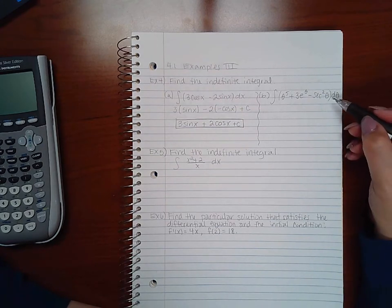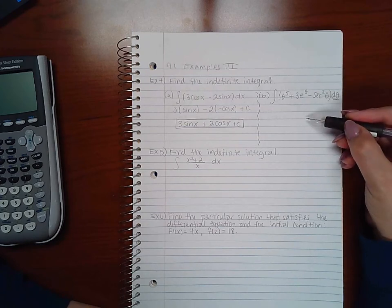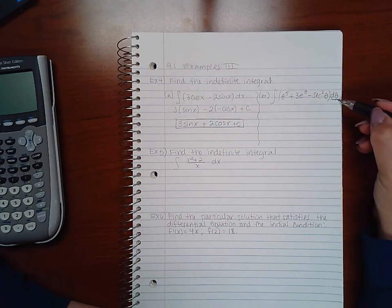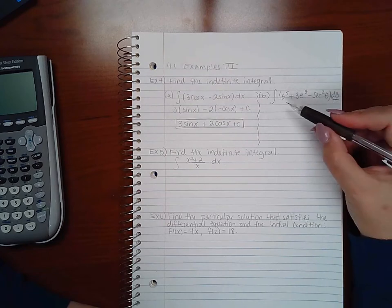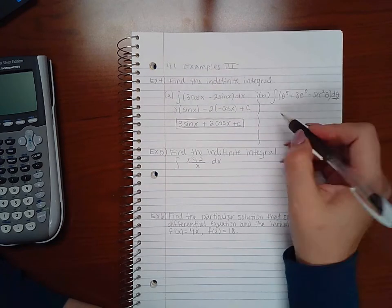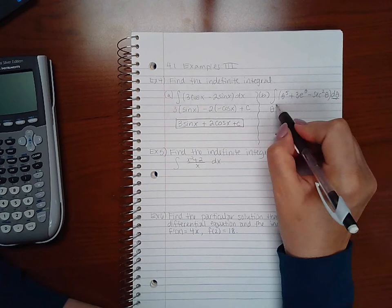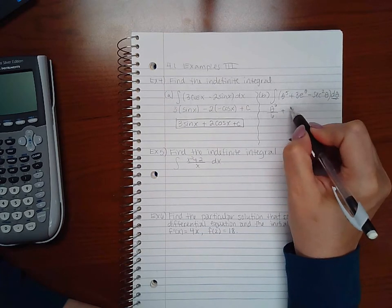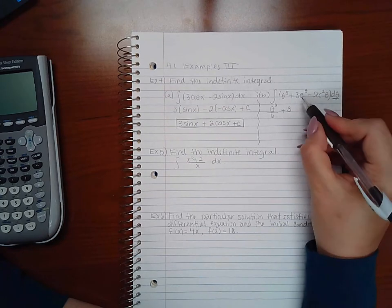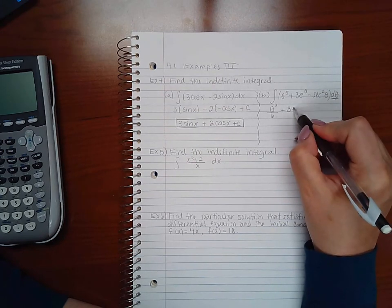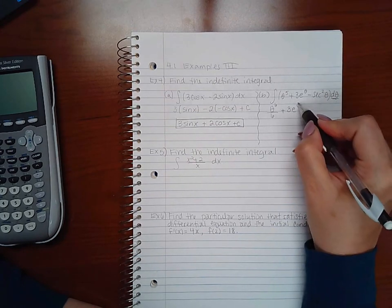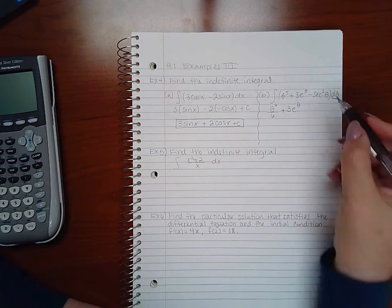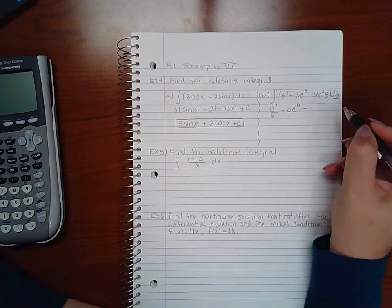I'm going to do the power rule just like I did before except my variable stays theta. If I add one, I have to divide by my new power. Three is my constant multiplier. The integral of e to the x or e to the theta is the same, e to the theta, and then the integral of secant squared is tangent theta, and then my constant of integration.